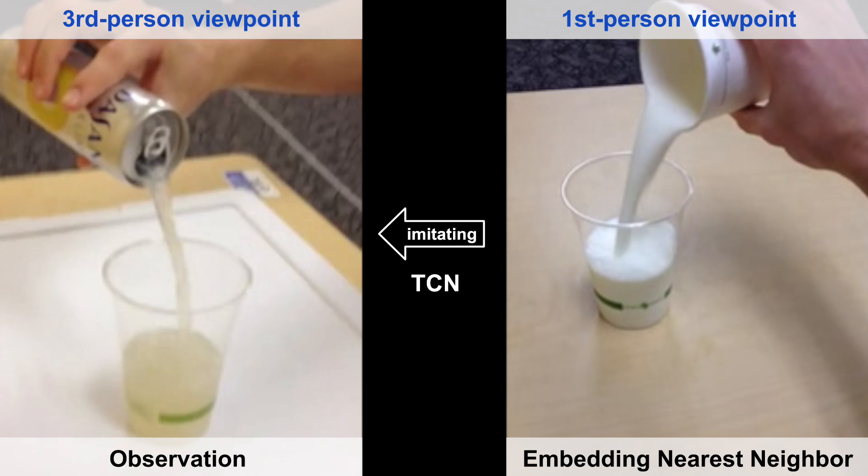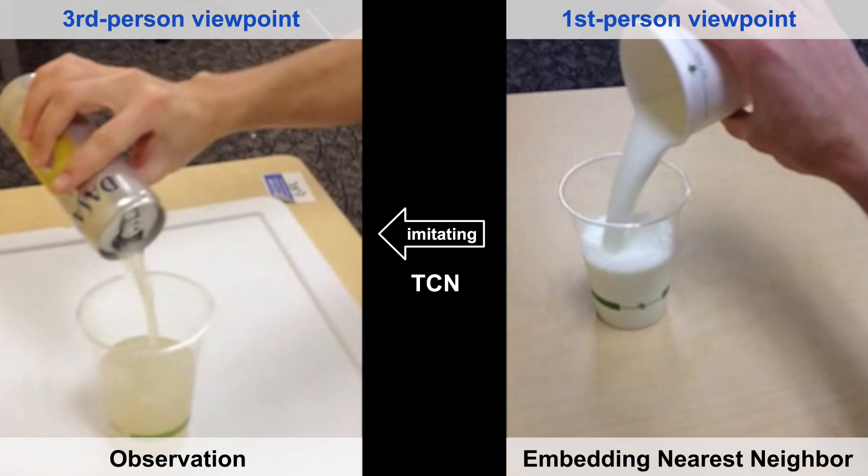In this video, we show the nearest neighbors for each frame on the left in the embedding space learned by our model.